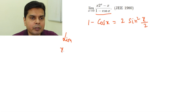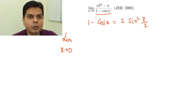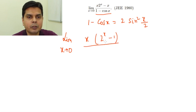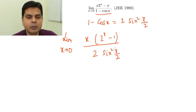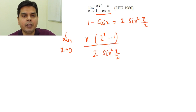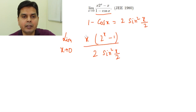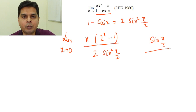So this expression I can write as: limit x tends to 0 of x times (2 to the power x minus 1) divided by 2 sin²(x/2). Now, in order to find the limit involving sin²(x/2), I need an x² term in the denominator, so that I can form the expression sin(x/2) divided by (x/2).